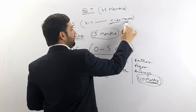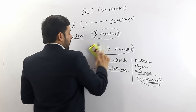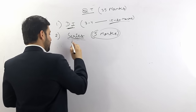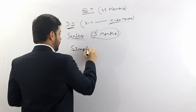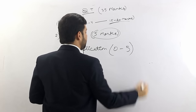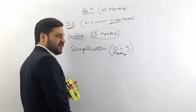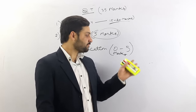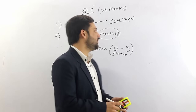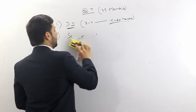One chapter I missed is simplification. Simplification can or cannot be part of the QT section — you can find 0 to 5 questions from simplification. It is normally part of the SBI Clerk or IBPS Clerk exam, but sometimes we see complex calculation problems in the simplification chapter. That's all for the QT syllabus.